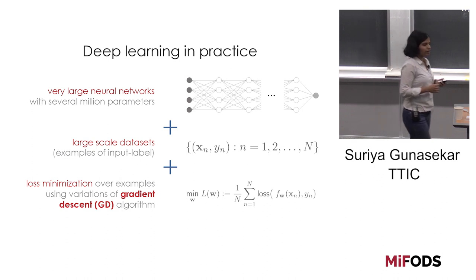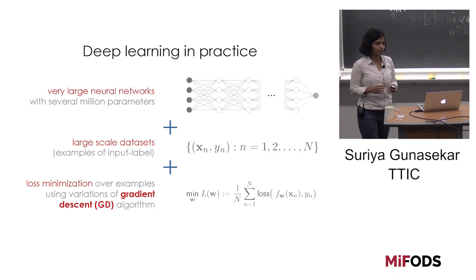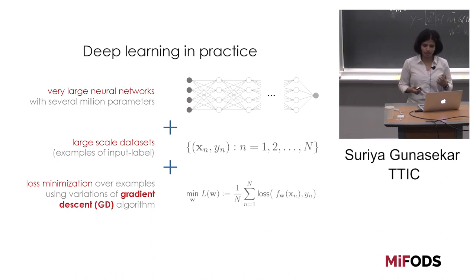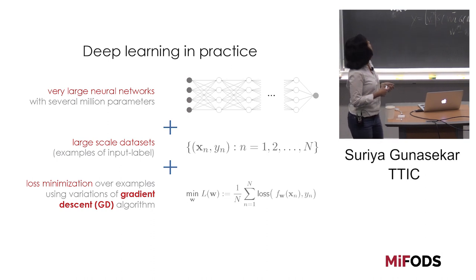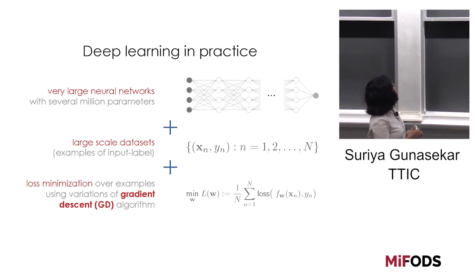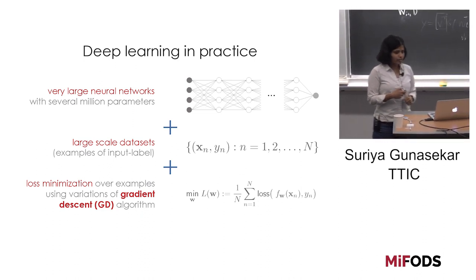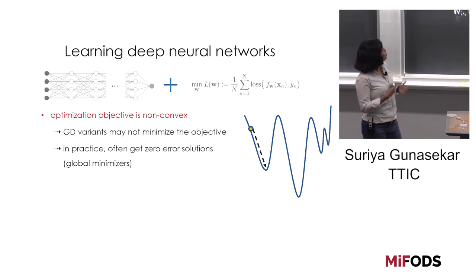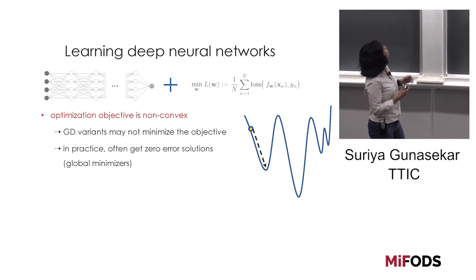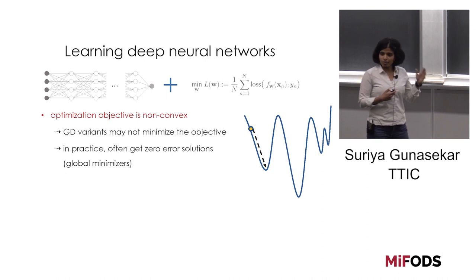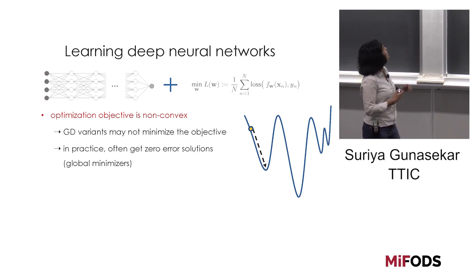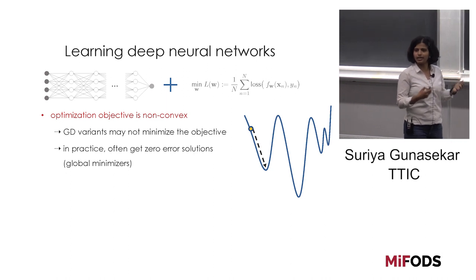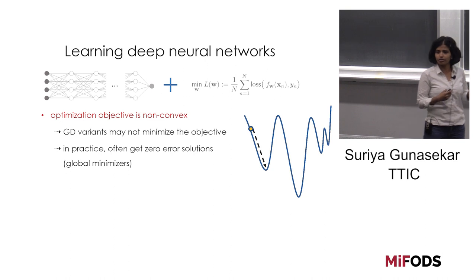A winning recipe for the empirical success of deep learning has arisen from a combination of training very large neural networks on large-scale datasets comprising input-output pairs. A key component of the learning process involves loss minimization over the observed examples using algorithms which are simple variants of gradient descent or stochastic gradient descent. In practice, neural networks trained on real datasets typically end up giving zero error solutions, which are global minimizers of the problem.